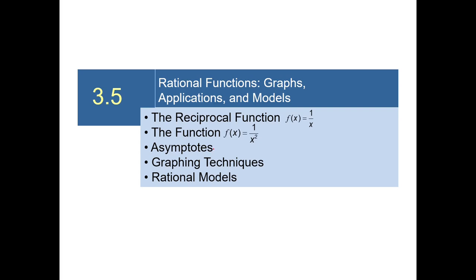In section 3.5, the important topics are the reciprocal function f of x equals 1 over x, the function f of x equals 1 over x squared, asymptotes, graphing techniques, and rational models.